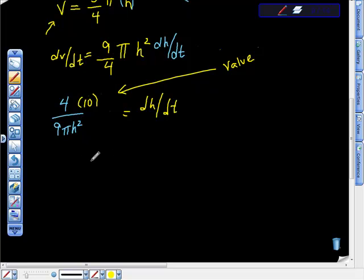So all we would do is our answer would be 4 times 10 over 9 pi times h—h is height and they want to know 15 squared, isn't that right? Feet per minute.